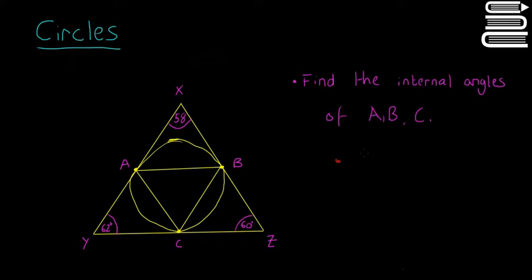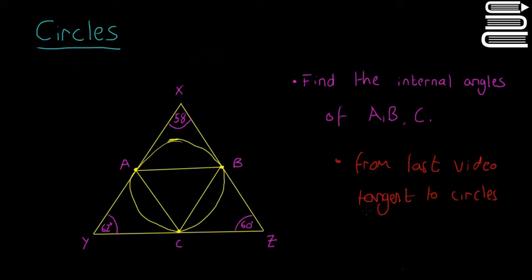The main trick here comes from the last video — two tangents to a circle from the same point are always the same distance. So if we take point X and look at the two sides of the triangle as tangents, we know that XA is going to be equal to XB. So we put one tick mark on each of those.